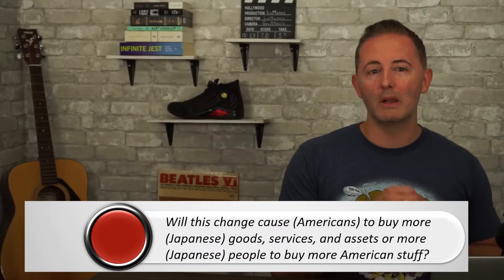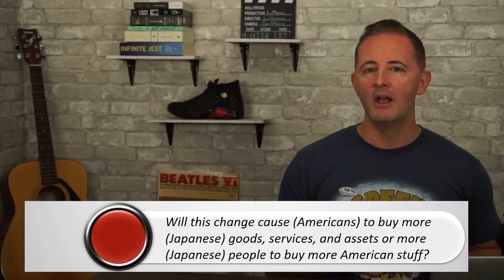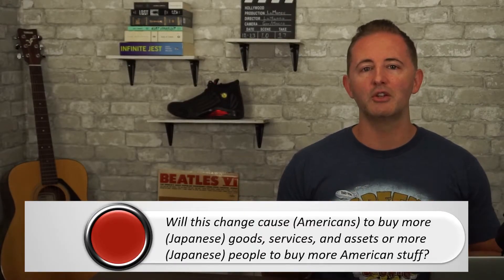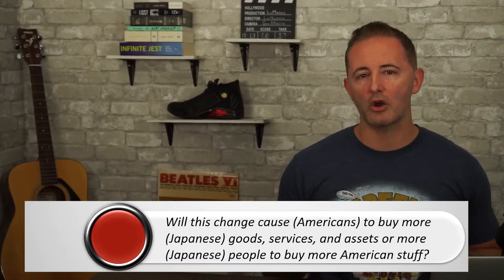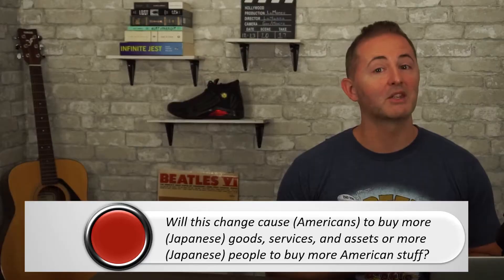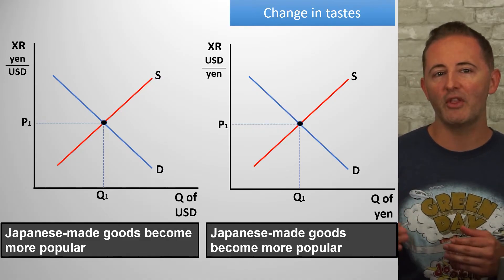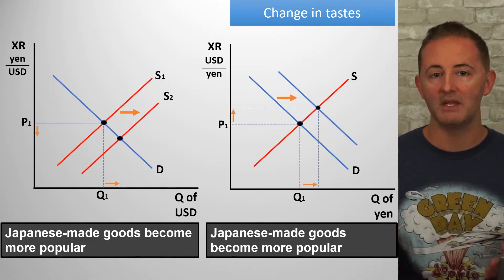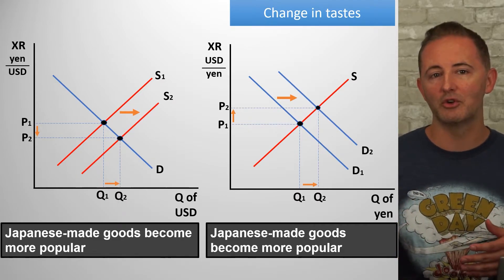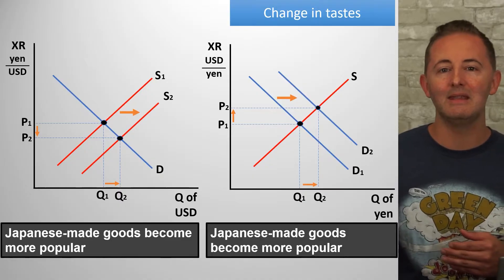Since this is a review video, we'll go through shifters quickly, but when taking a test don't rely on a memorized list — consider the scenario and decide: will this cause Americans to buy more Japanese stuff, or will it cause Japanese people to buy more American stuff? The dollar and the yen will be our currencies for these examples. Starting with a change in tastes: imagine Japanese-made goods get more popular in the US. Demand for the yen increases so Americans can buy more Japanese stuff, and the supply of the dollar also increases so Americans can buy the yen they need.